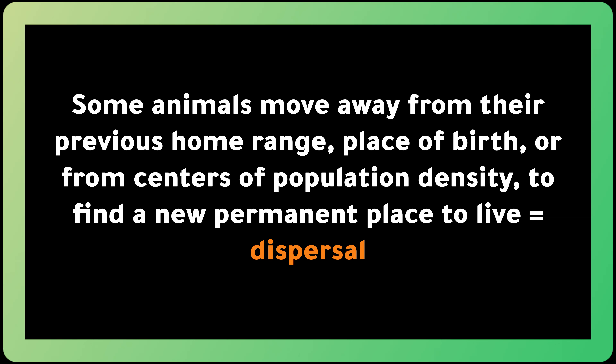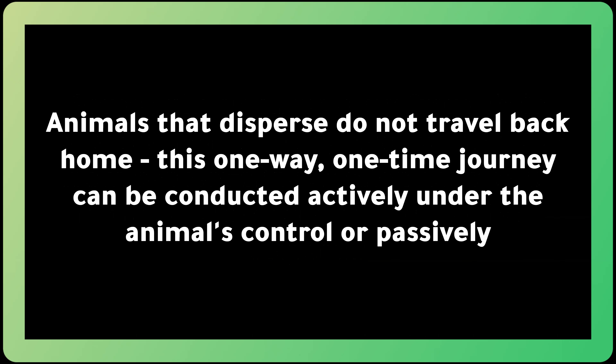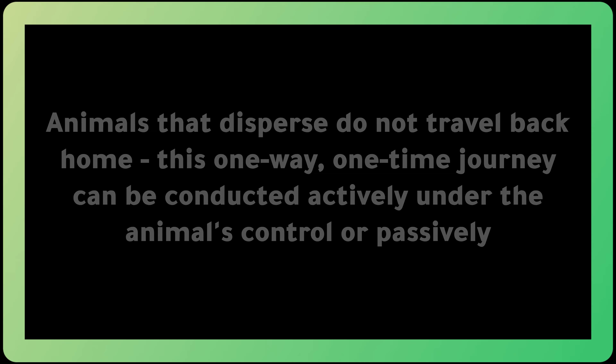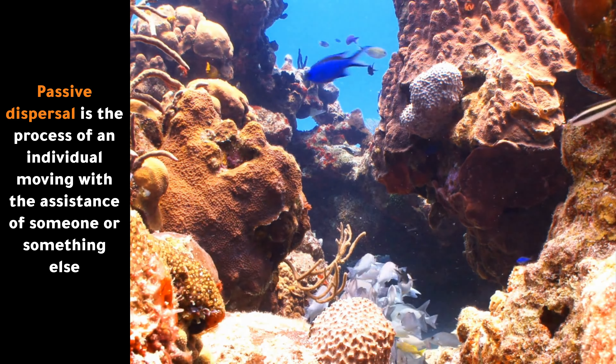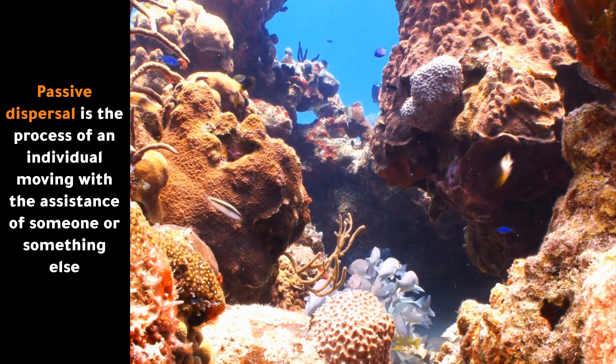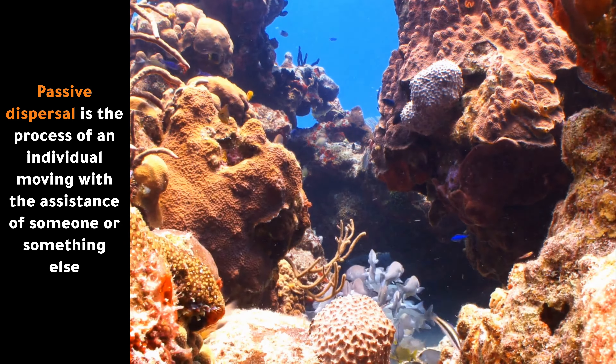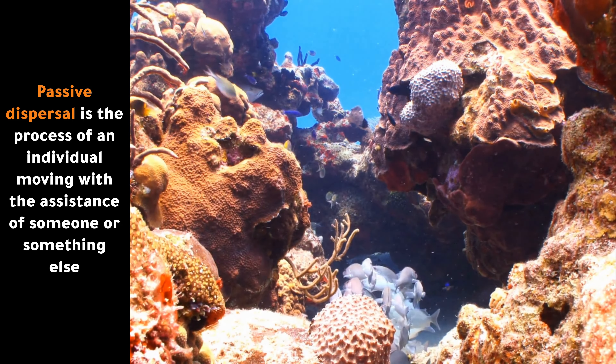Some animals move away from their previous home range, place of birth, or from centers of population density to find a new permanent place to live. This movement is called dispersal. Animals that disperse do not travel back home. This one-way, one-time journey can be conducted actively under the animal's control, or passively — such as moving with the wind or currents, or on the body of another animal or on the hull of a ship.